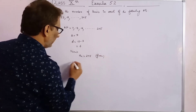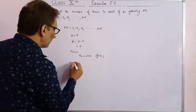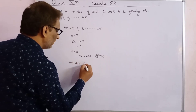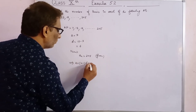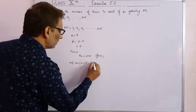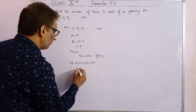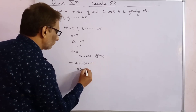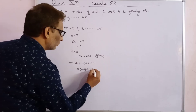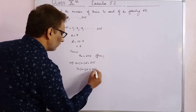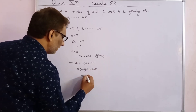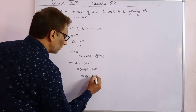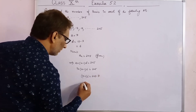Question 5: Find the number of terms in each of the following AP. Using the formula: 7 plus (n minus 1) into 6 equals 205. So, (n minus 1) into 6 equals 205 minus 7.